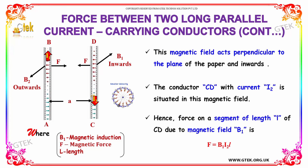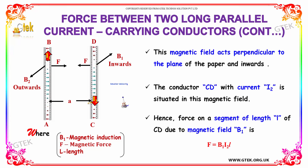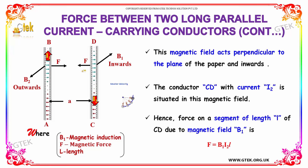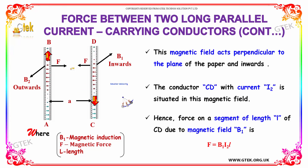The conductor CD with current I2 is situated in the magnetic field. Hence, the force on the segment L of CD due to the magnetic field B1 is: force equal to B1 into I2 into L, which acts inward.